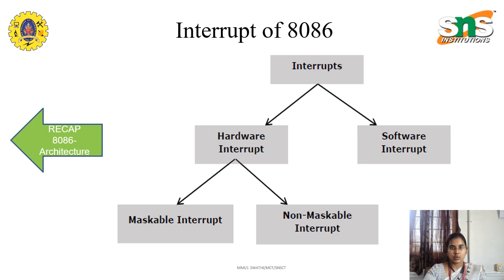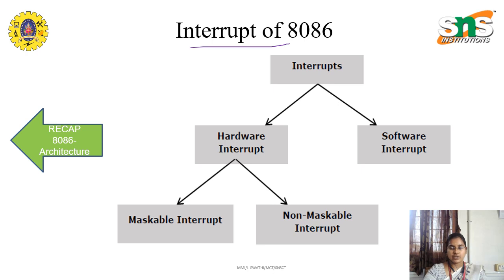We have discussed about the architecture of 8086. We have two major functional blocks like execution unit and bus interface unit. The major features of 8086 is that we have 20-bit address data and we have instructions which has two opposite ways of instruction, and we have the pipelining technique so that the next instruction can be fetched easily when the current instruction is being executed.